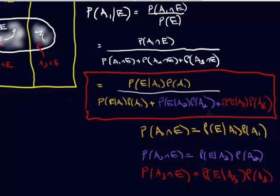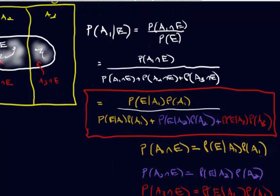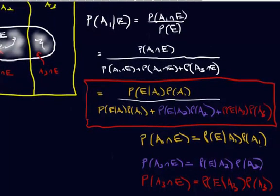If you had n sets, the denominator would just extend all the way out to n. Hopefully this video helps you understand where Bayes' theorem comes from, helps you with word problems, and gives you a greater appreciation of how important Bayes' theorem is to probability. See you in the next video.